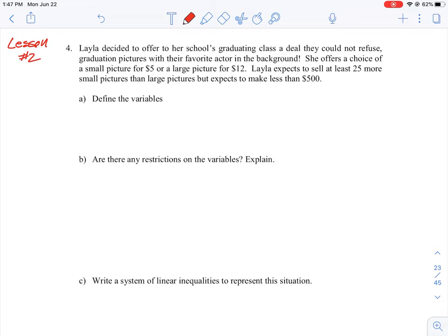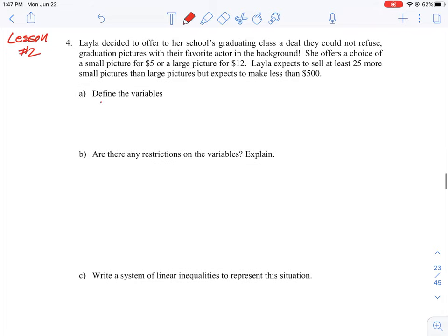She sells 25 more small pictures than large pictures. So first thing we need to do is define the variables. We can say x is equal to just the number of small pictures. We can just pick a variable and assign it to that and then the other term we're talking about is y which is the number of large pictures.